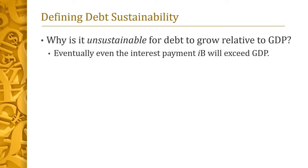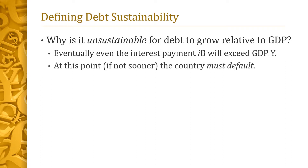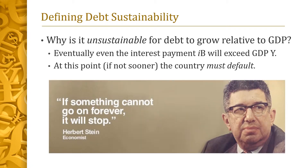Why do we say that it is unsustainable for a country's debt to grow continually relative to its GDP? Well, a country repays its debt out of its national income, which is just its GDP. Thus, if debt continues to grow relative to GDP, eventually the required interest payments on the debt — which is just the interest rate I times debt B — will exceed the country's income. At this time, if not beforehand, the country will have to default since it will not be able to pay the interest on its debt. As the famous economist Herbert Stein once said, if something cannot go on forever, it will stop.